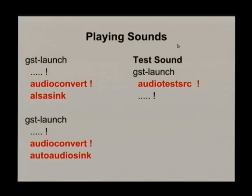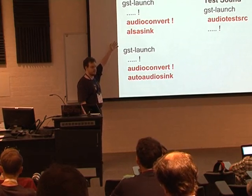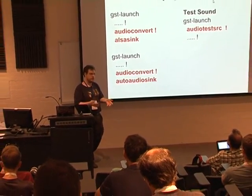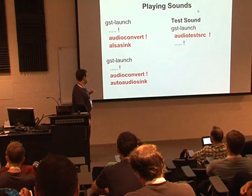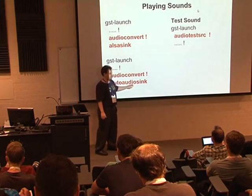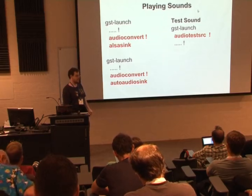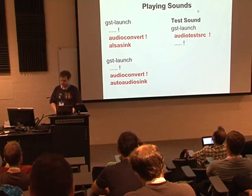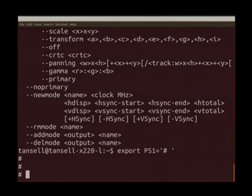So I'm going to start with trying to play some sound. GST Launch basically takes a bunch of elements. The first one we care about is the audio test source, which produces a kind of annoying buzz sound so you can test your audio. Then we connect it to an audio converter, which converts from one format to another. Then we connect it to an auto audio sink — rather than worrying about alsa or PulseAudio, the auto audio sink automatically chooses the right one for your system. So our full pipeline is going to look like what I'm going to type up here — and this is live so I'm going to get things wrong.